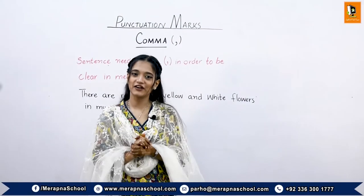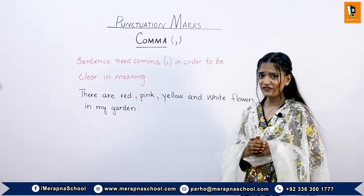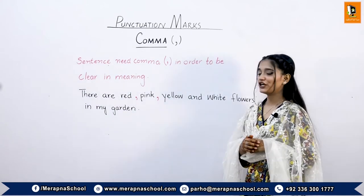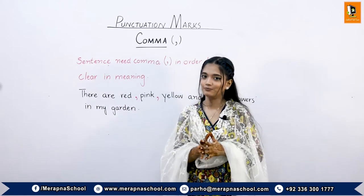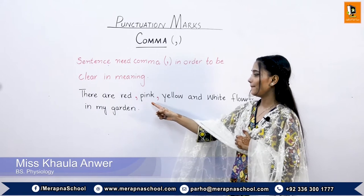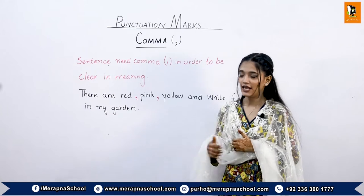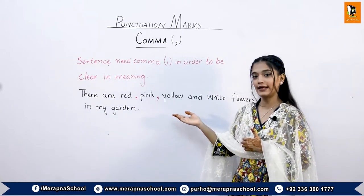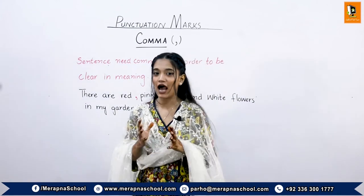Now we are going to start the next punctuation mark, which is the comma. We use a comma in a sentence to make the meaning clear. For example, 'There are red, pink, yellow, and white flowers in my garden.' If you don't put commas in this sentence, the sentence would not be clear in meaning. There are also some rules for how and where we use commas.